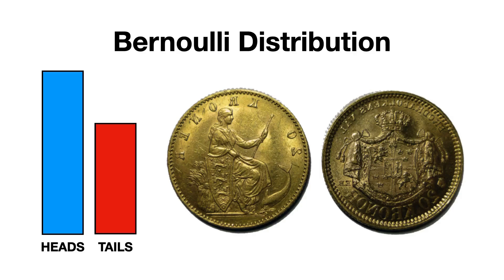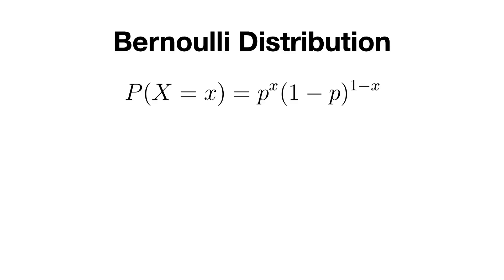The probability of success, which is heads, is p, and the probability of failure, or tails, is 1-p. And the probability distribution formula for Bernoulli trial is the following: P(X = x) = p^x(1-p)^(1-x), where x is either 0 or 1.